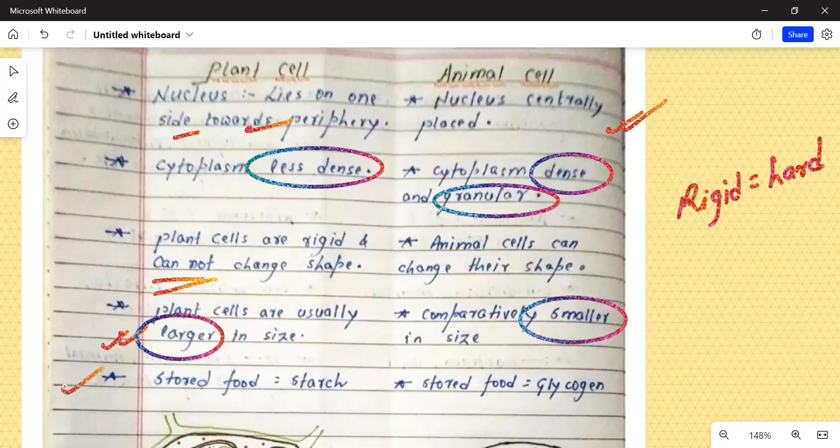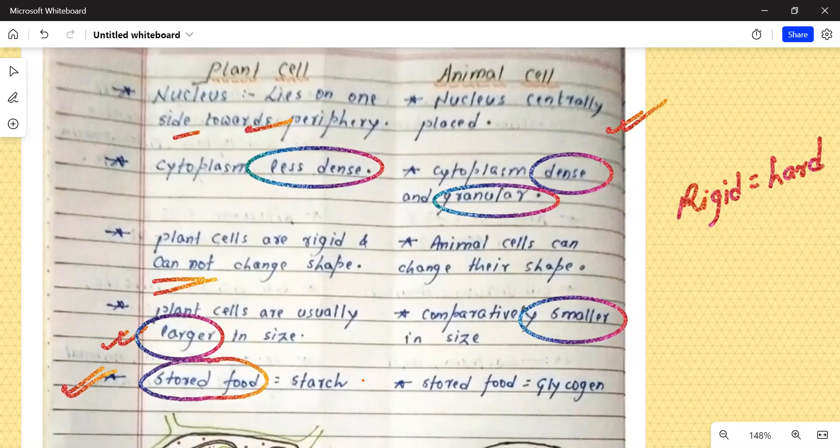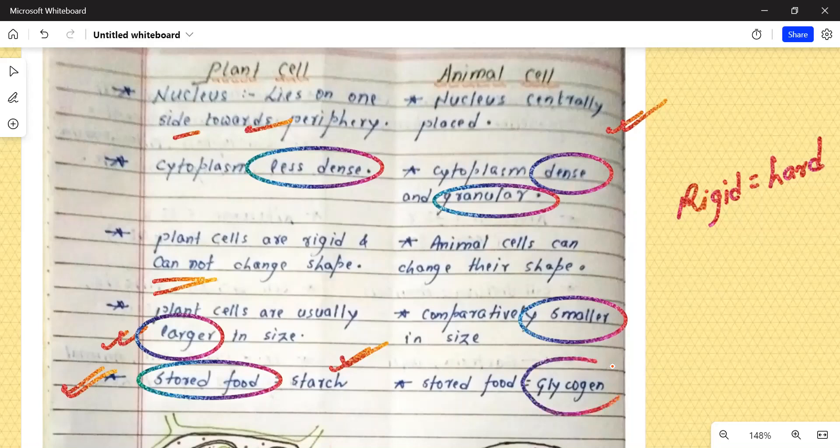Agar baat karte hai plant cell ki, to plant cell mein jo stored food hoti hai, jo jama khana hoti hai, that is known as starch, type of carbohydrate. But animal cell ka jo stored food hoti hai, that is glycogen. Both starch and glycogen, dono hi jo hote hai, yeh carbohydrate group ke member hote hai.